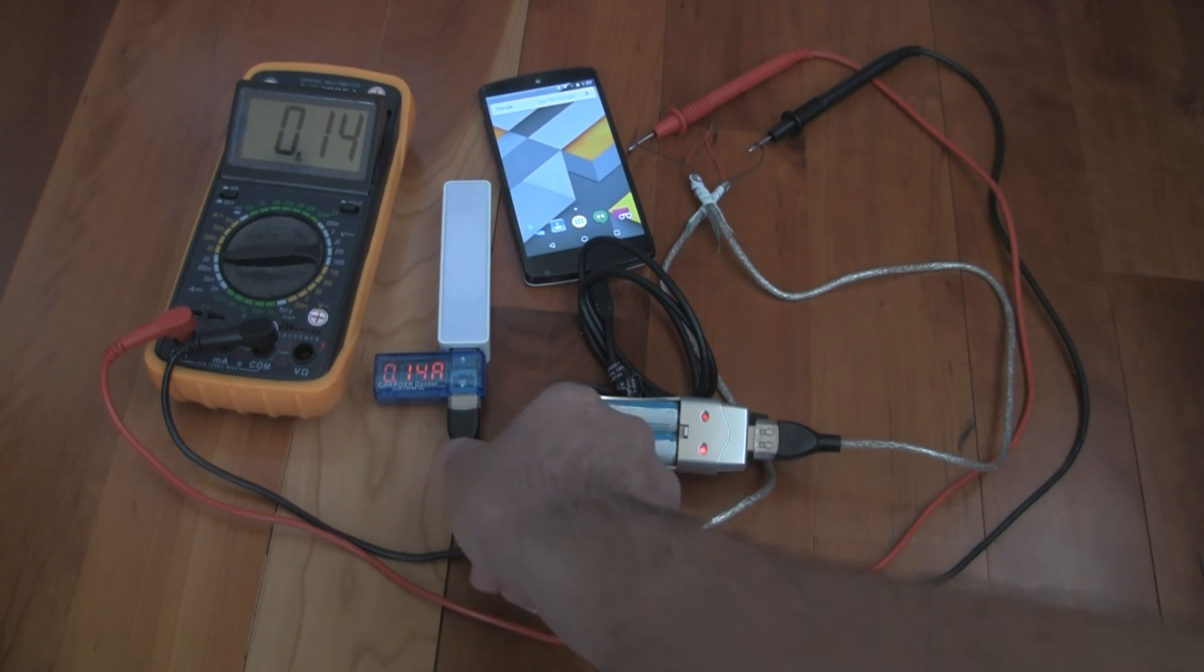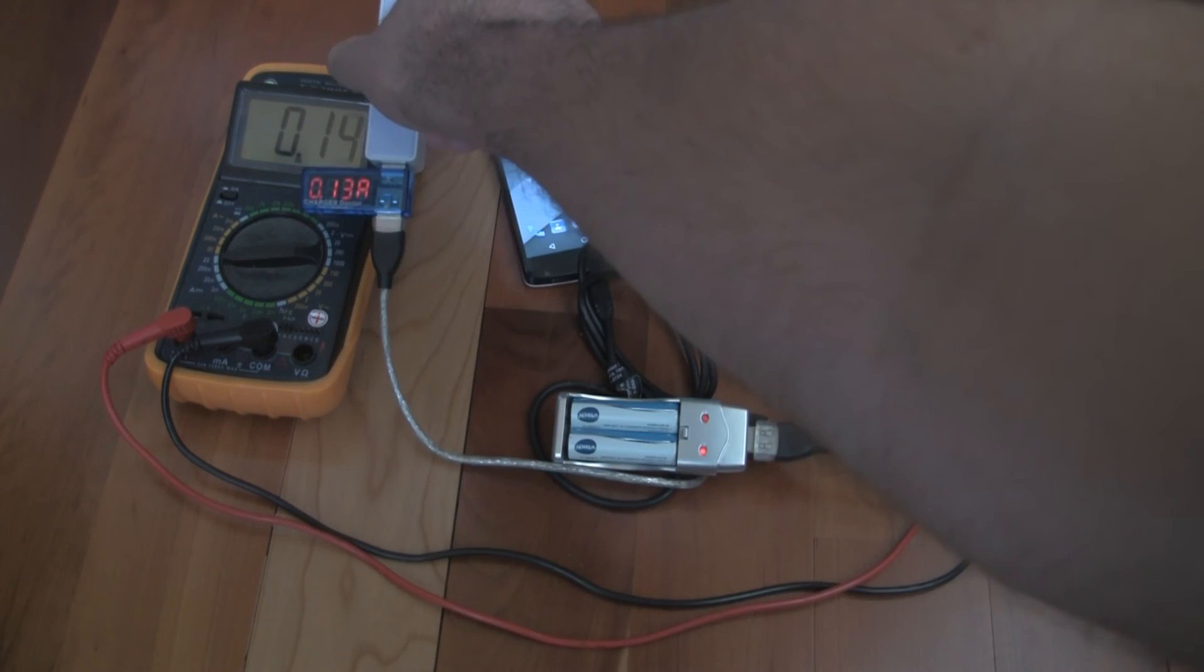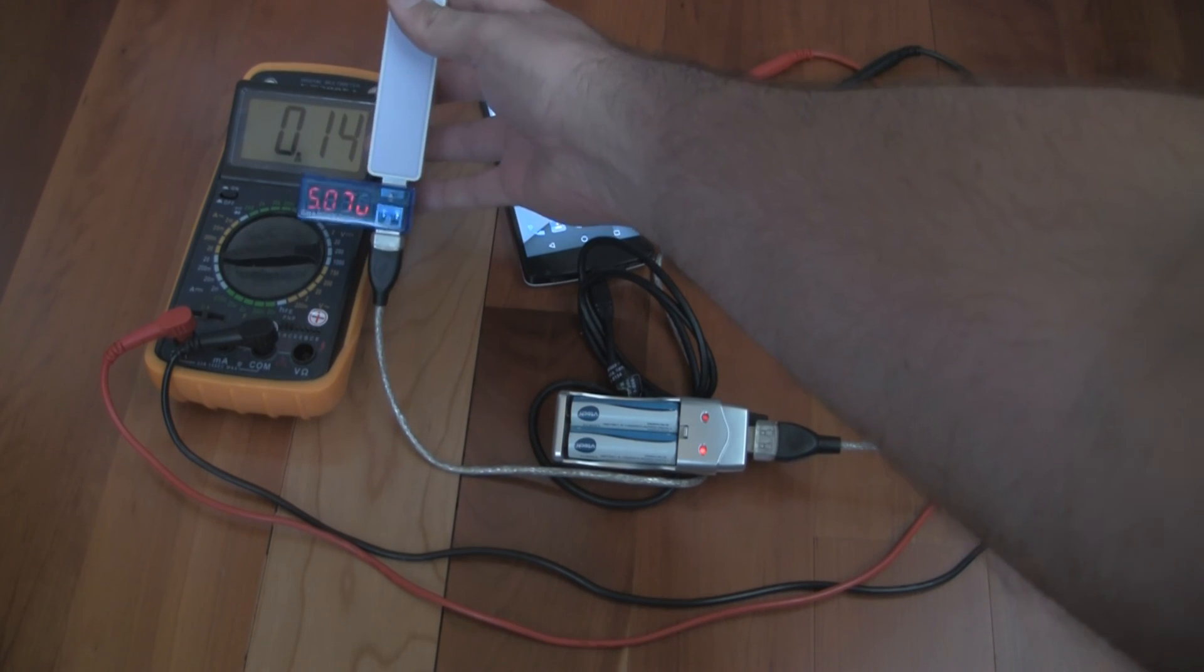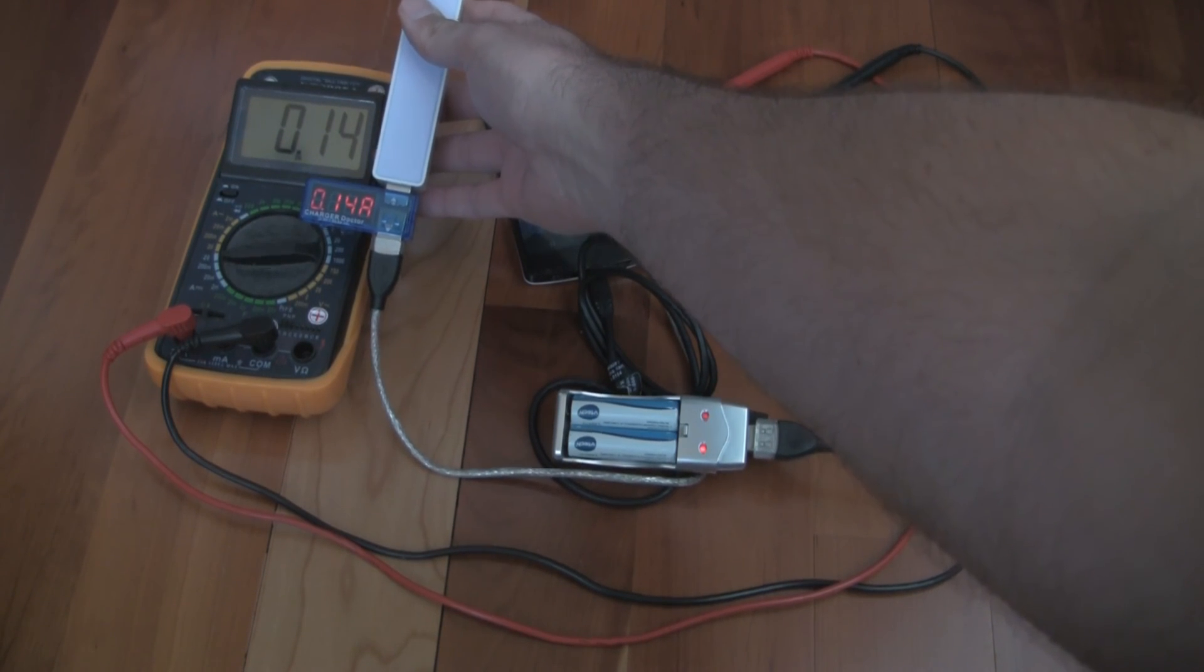So, the Charger Doctor is at 0.14, 0.13 and the multimeter is at the same, 0.14.